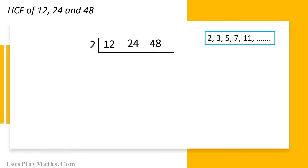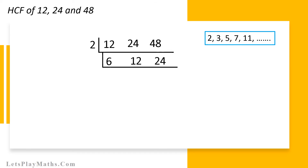Now, divide 12, 24 and 48 by number 2. If we divide 12 by 2, the result will be 6 as shown here. If we divide 24 by 2, we will get 12. And if we divide 48 by 2, the answer will be 24 as shown here.